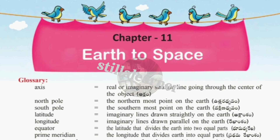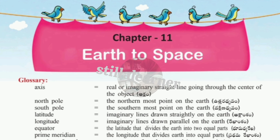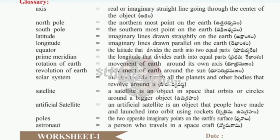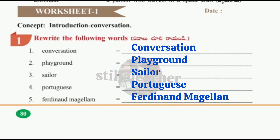The first glossary term is 'axis,' which means a real or imaginary straight line going through the center of an object. Second is 'north pole,' meaning the northernmost point on the earth. Third is 'south pole,' meaning the southernmost point on the earth. Next, 'latitude' means imaginary lines drawn horizontally on the earth.